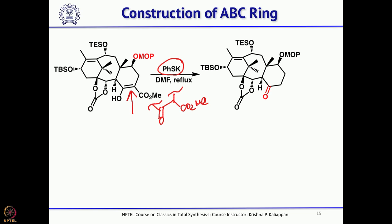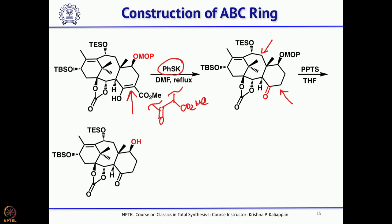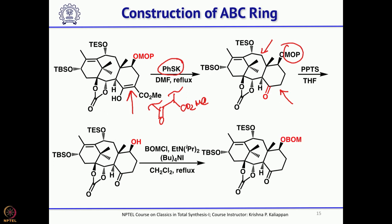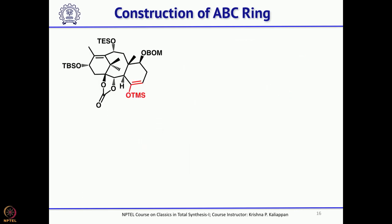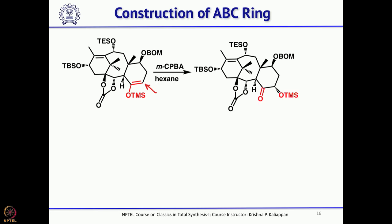Looking at this intermediate, a functional group is needed here, and then the oxetane ring. Treating with PPTS, then the MOP group is converted to BOM — benzyloxymethyl chloride — as a better protecting group. Then to convert the ketone to oxetane: LDA generates the enolate and quenching with TMS chloride gives the enol TMS ether. Then treating with mCPBA — it opens up and forms the OTMS.